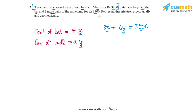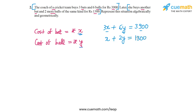The second piece of information says she buys another bat and two more balls of the same kind for 1,300 rupees. Another bat will cost x rupees and two more balls will cost 2y rupees. The sum of these costs should be 1,300, so we get our second equation: x + 2y = 1300.